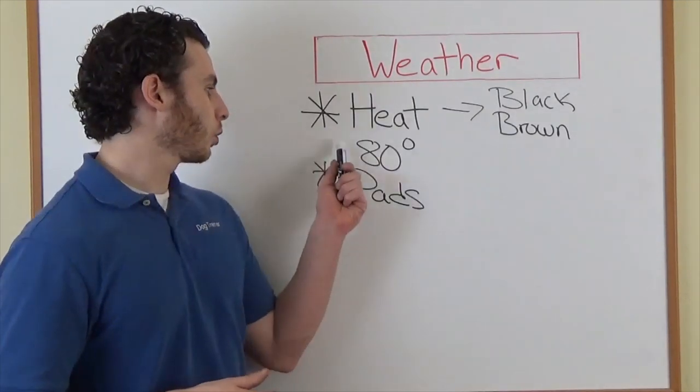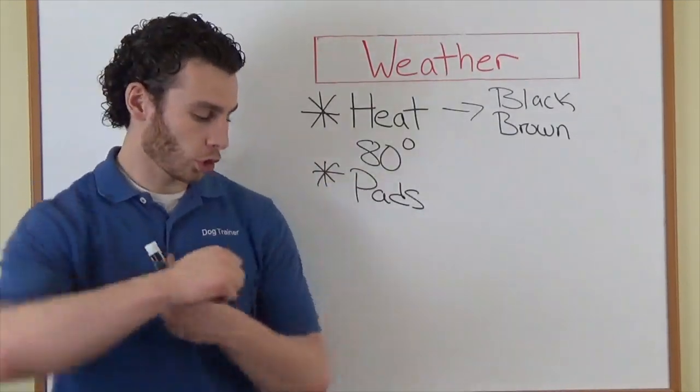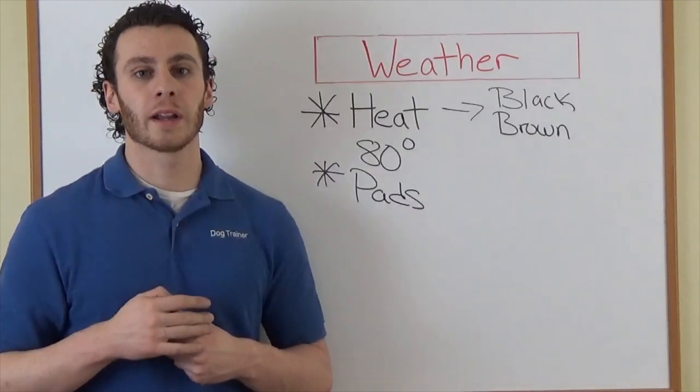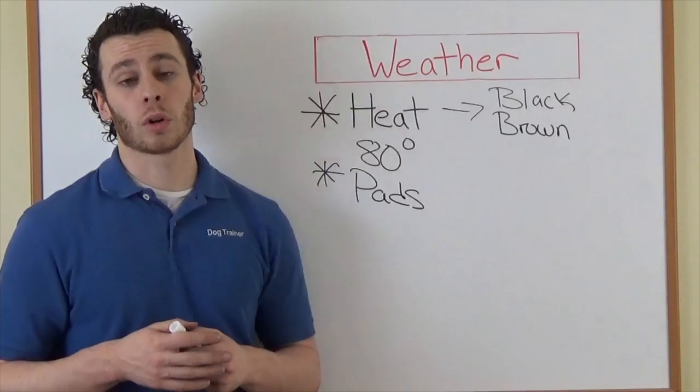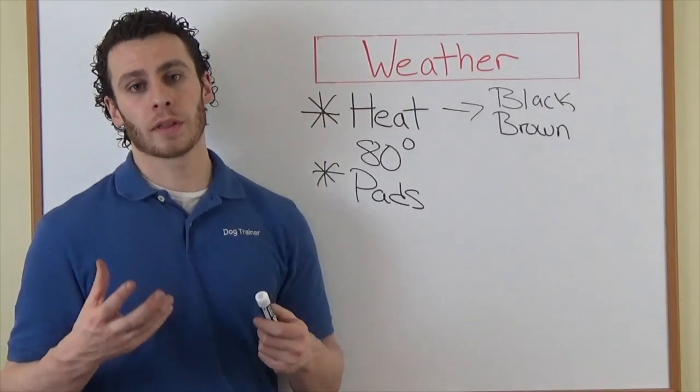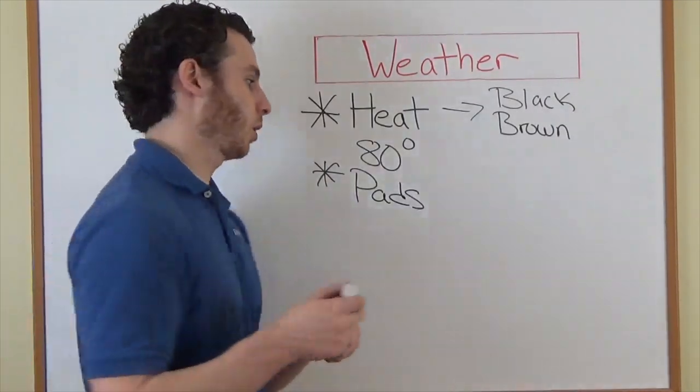So if it's 80 degrees out and you put your coat on and you go outside, if you think you're going to be too hot walking around, well, your dog is going to be too hot walking around. So keep that as kind of a general rule.